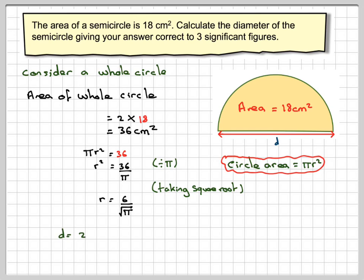So that's the radius. To find the diameter, we need to do 2 times the radius, which is going to be 2 times 6 over the square root of π. Therefore, d will be equal to 12 divided by the square root of π.